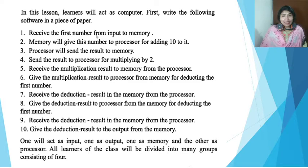Step 1: Receive the first number from input to memory. Step 2: Memory will give this number to processor for adding 10 to 8. Step 3: Processor will send the result to memory. Step 4: Send the result to processor for multiplying by 2. Step 5: Receive the multiplication result to memory from the processor. Step 6: Give the multiplication result to processor from memory for deducting the first number. Step 7: Receive the deduction result in the memory from the processor. Step 8: Give the deduction result to processor from the memory for deducting the first number. Step 9: Receive the deduction result in the memory from the processor. Step 10: Give the deduction result to the output from the memory.